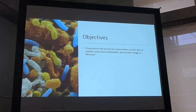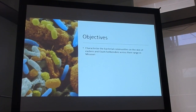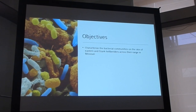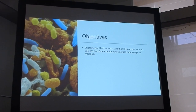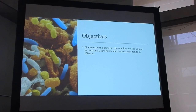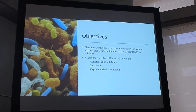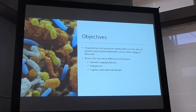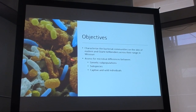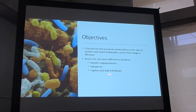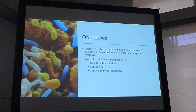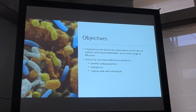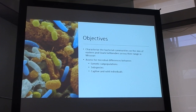So what are the objectives of my study? I'm really interested in finding genetic drivers in the microbiota of hellbenders in Missouri. It's a perfect state to do this because the two subspecies are found in very close proximity. I'm trying to assess at what level differentiation of microbiota happens — whether it happens at the level of genetic subpopulations, at the subspecies level, and also what are the differences between captive and wild individuals.